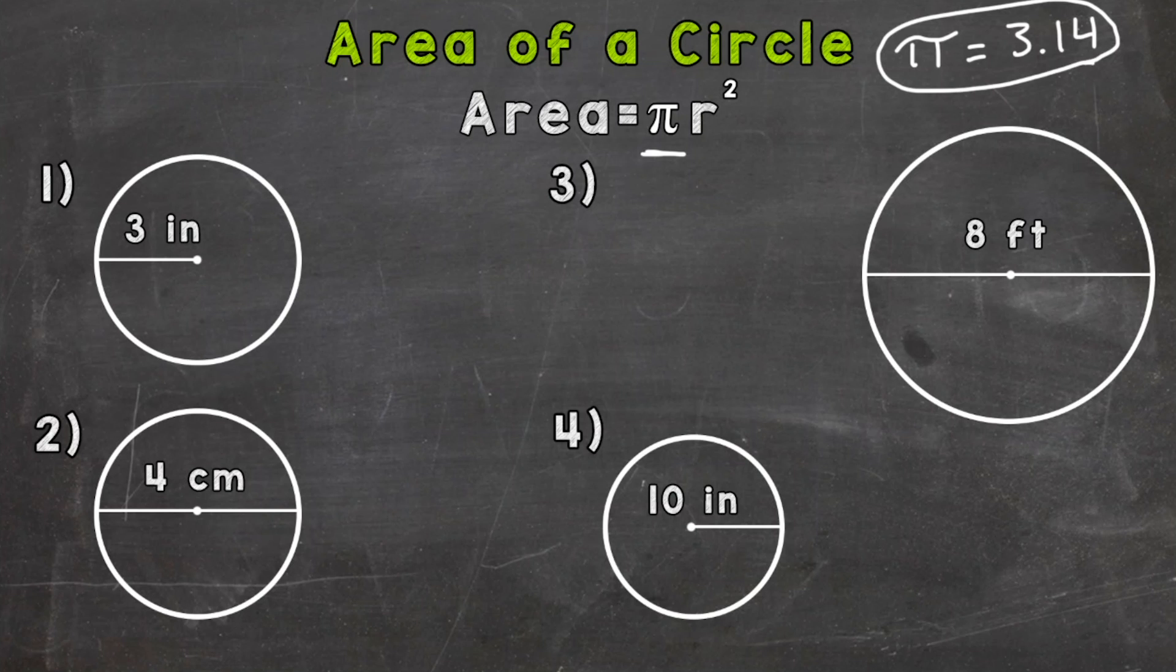I have a circle with a radius of three inches and we want to find the area. So the first thing we want to do is write out our formula. So area equals pi times radius squared. Then we want to plug in our radius. So area equals pi times the radius of three inches squared.